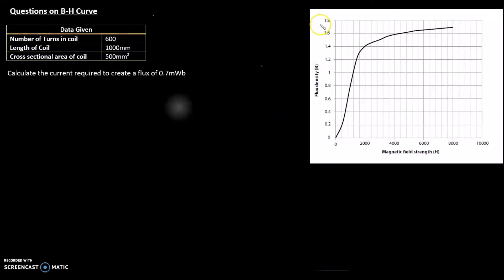Hi guys, this is a basic BH curve. You have your B on the y-axis, your H magnetic field strength on the x-axis. It starts from zero and flattens up at this point which is called saturation. BH curves will be unique for each material, so every magnetic material has its own BH curve.